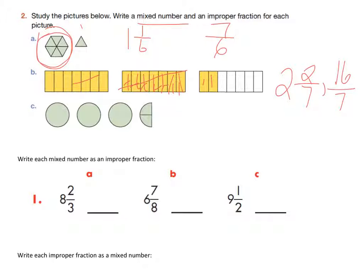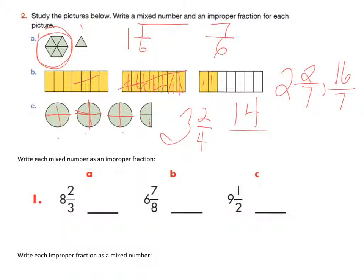Now try C if you haven't already. C is a little bit tricky — the picture isn't drawn perfectly, but you can see it would have to have been in fourths. I have three full ones and two out of fourths. Three groups of four is 12, plus 13, 14 — so 14 fourths. Fourths is my bottom number, 14 fourths.